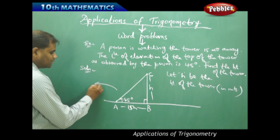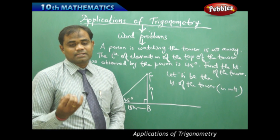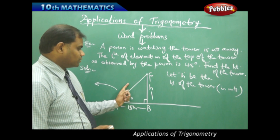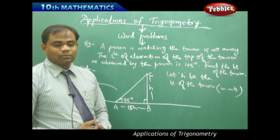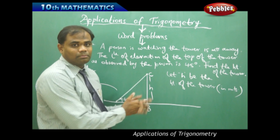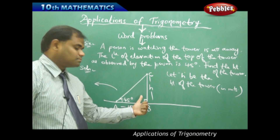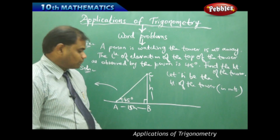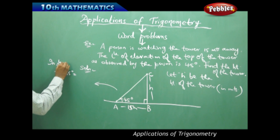Looking at the diagram clearly, there are three trigonometric ratios: sin theta, cos theta, and tan theta. Sin theta is opposite over hypotenuse, but since we don't need AC, we need h — the opposite side. The adjacent side is given, and we need to find the opposite side, so opposite and adjacent are related with tan theta. Tan theta helps us in this real-life problem — identification is very important.